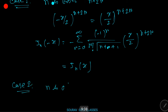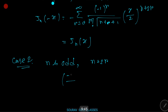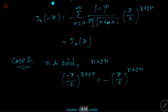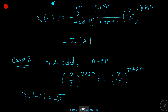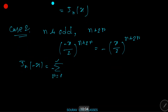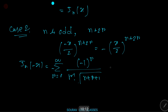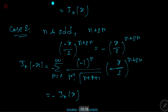Case 2 — if n is odd, then n+2r is odd, therefore (−x/2)^(n+2r) = −(x/2)^(n+2r). Then equation 2 becomes Jₙ(−x) = −Σ [(-1)^r / (r! · Γ(n+r+1))] · (x/2)^(n+2r) = −Jₙ(x). Since f(−x) = −f(x), hence Jₙ(x) is an odd function.